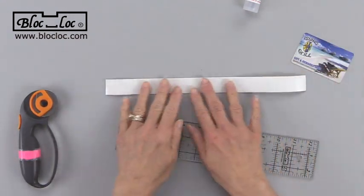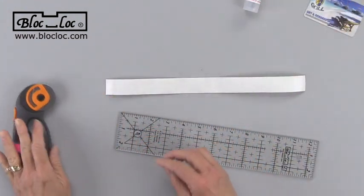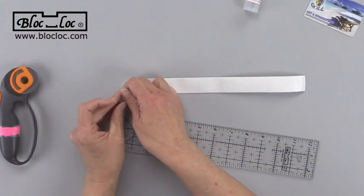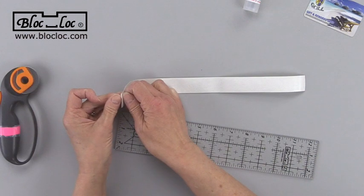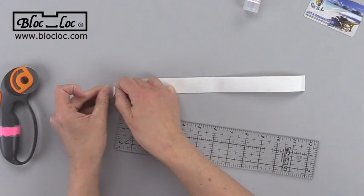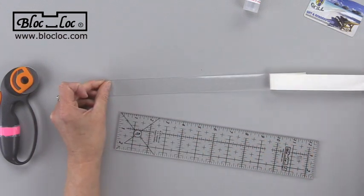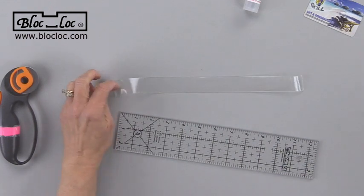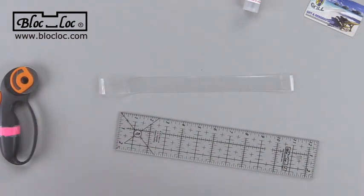Then you're going to place it on your mat with the paper side up, and then what you want to do is peel the paper away from the tape, just like that. It's sticking to my hands.